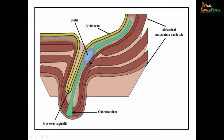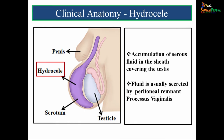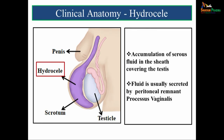Now we move on to the clinical aspects. Hydrocele is the accumulation of serous fluid in the sheath covering the testes, particularly the tunica vaginalis. Fluid gets accumulated inside the vaginal sac, forming the hydrocele.